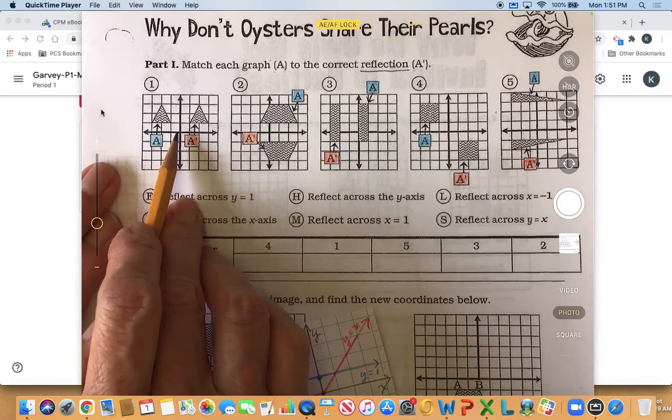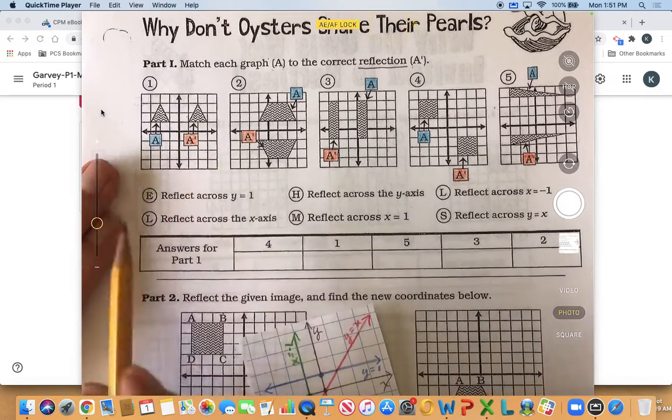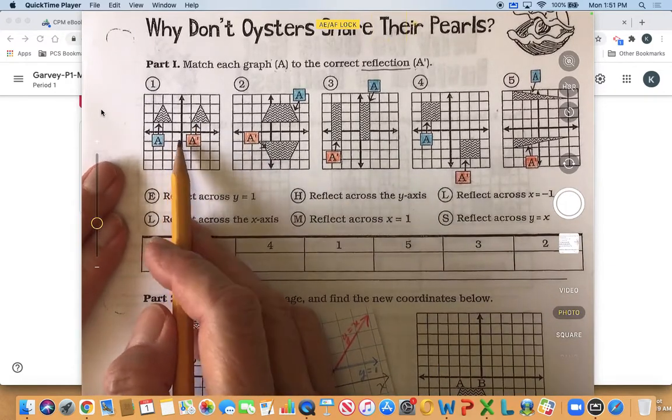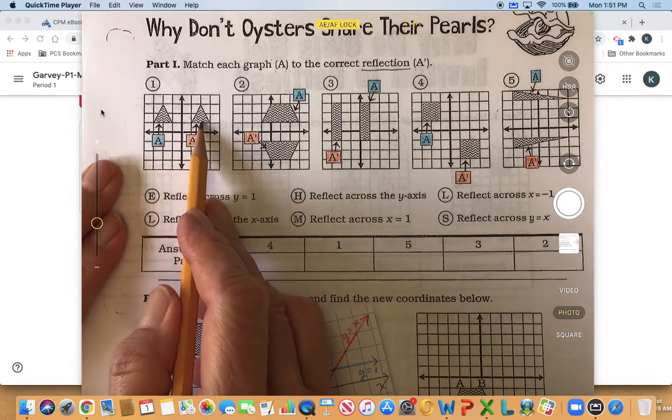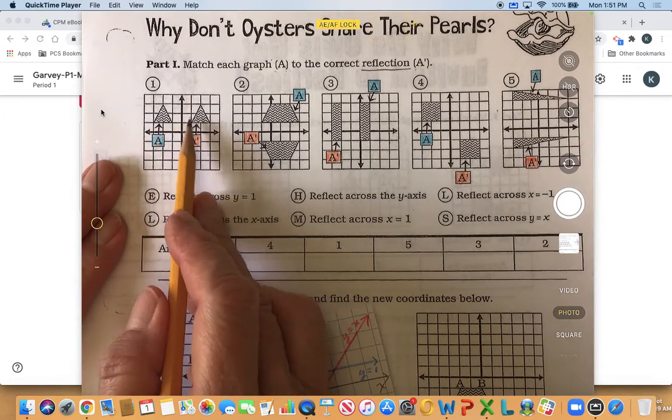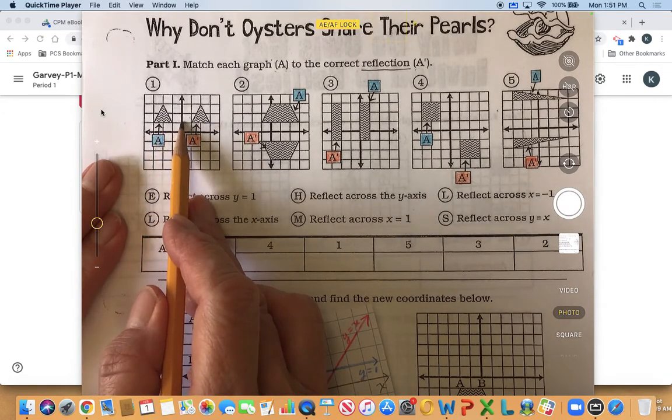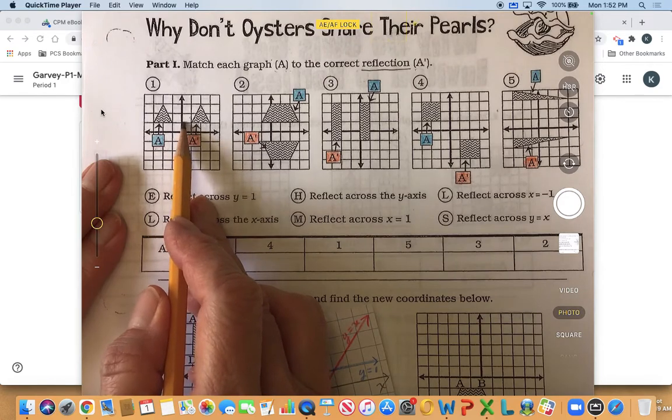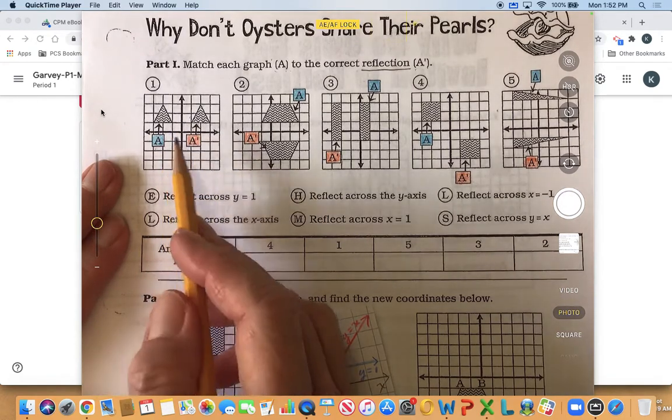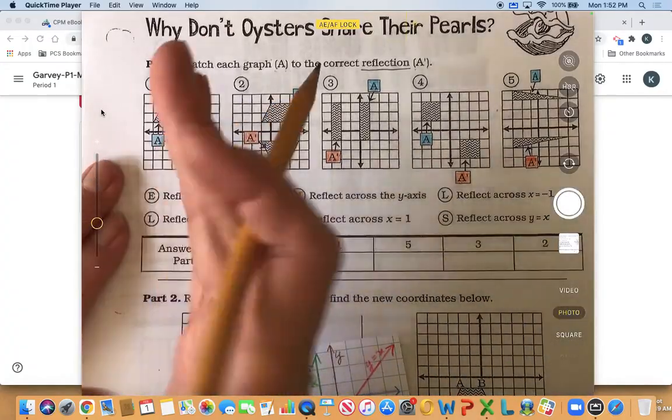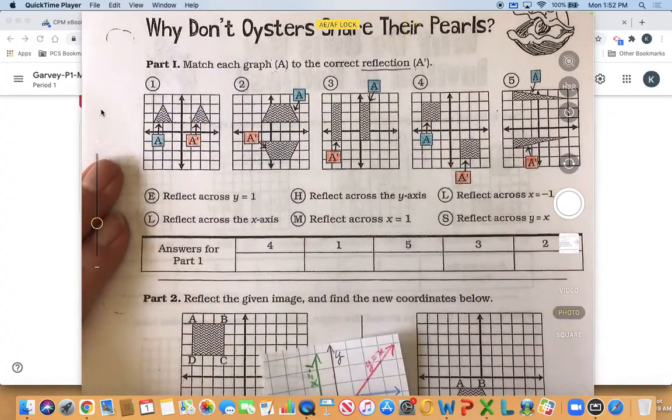All right so let's look at the first one. So with this one we can pretty much see that they're on the same line horizontally and it looks like they're one square away from the y-axis. So to me it really looks like it was reflected over the y-axis.